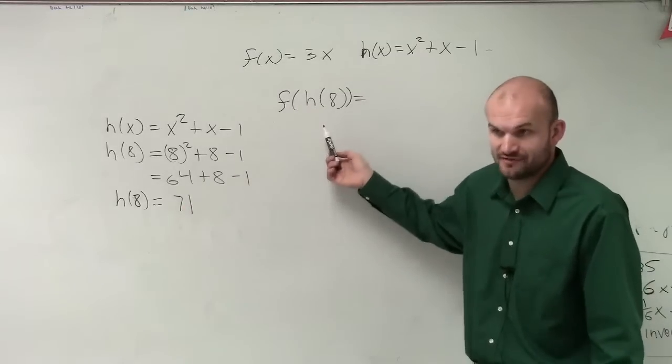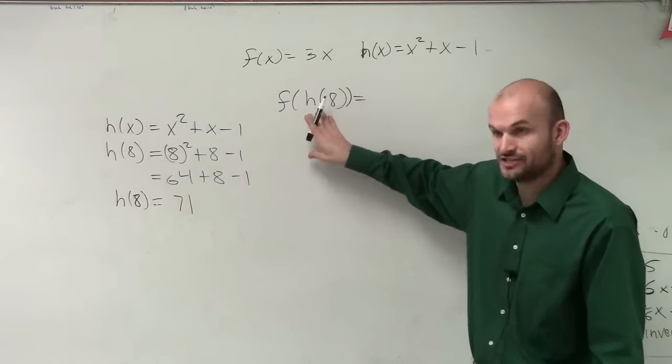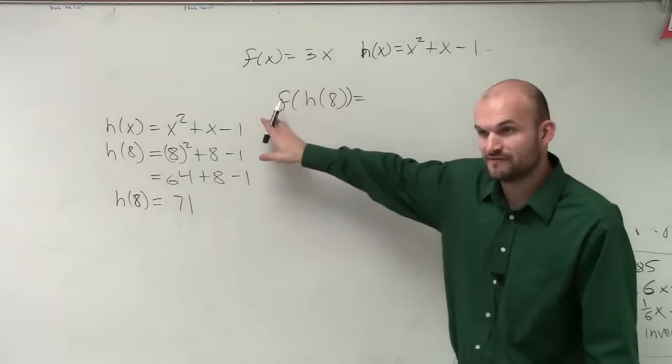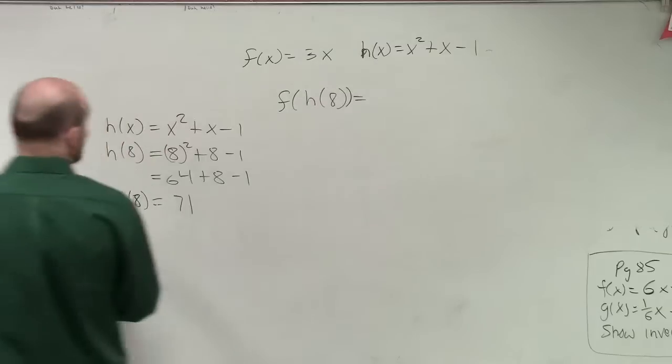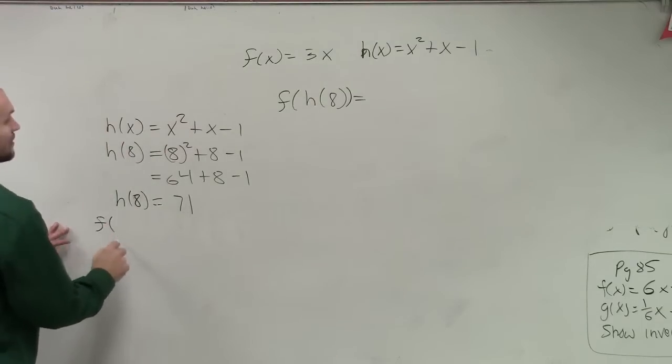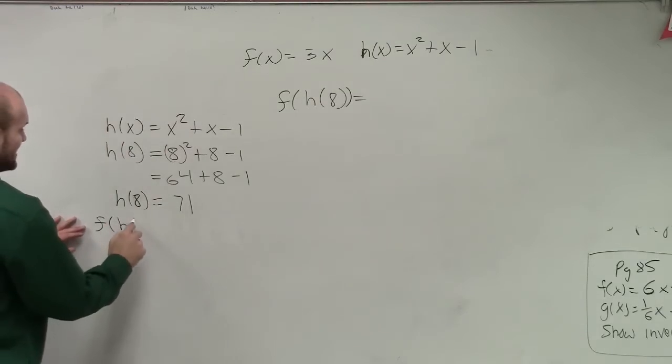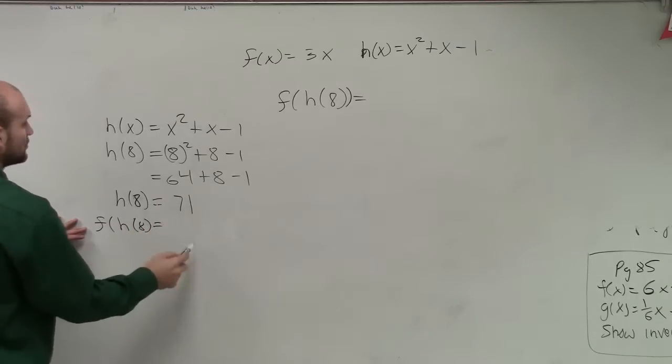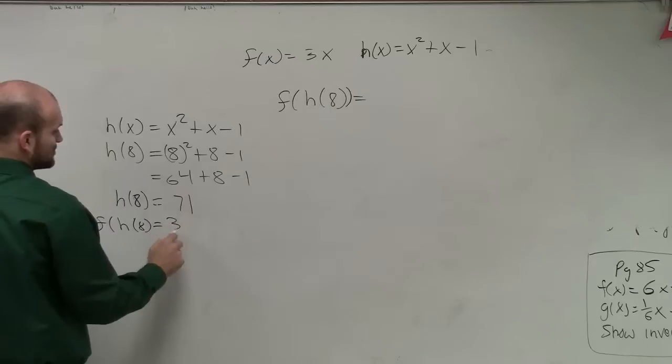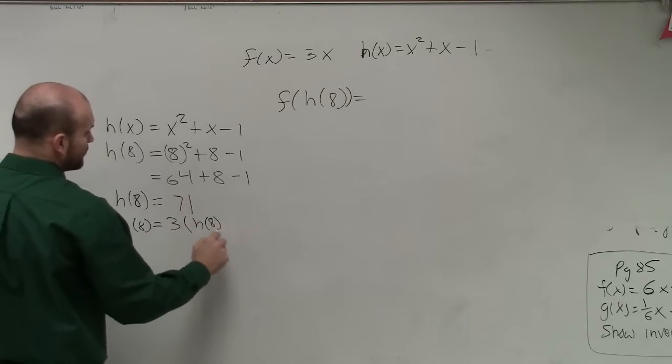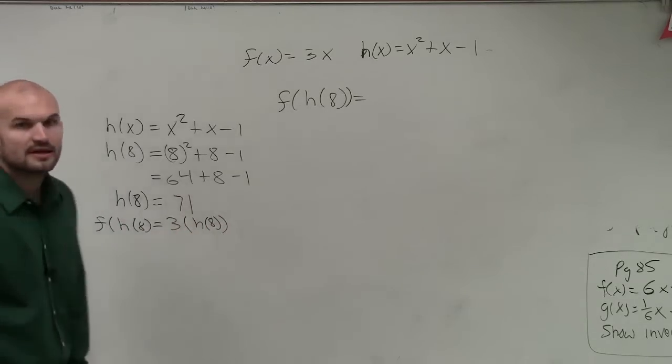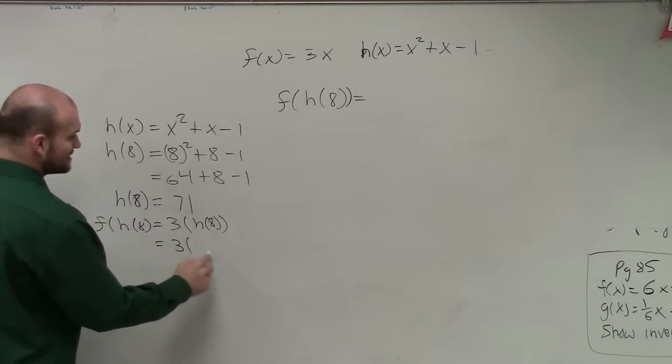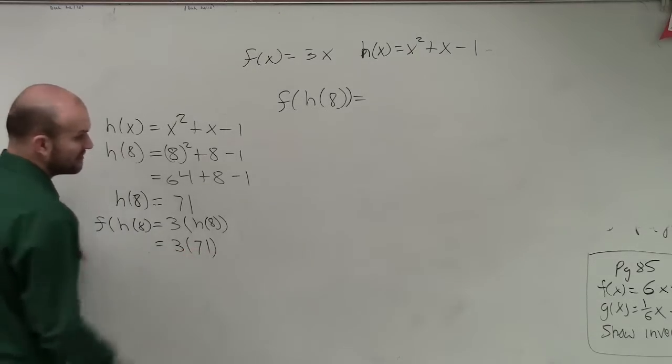it's saying find f of h of 8. That means we're going to plug h of 8 into my function f of x. So what we could say is f of h of 8 is equal to my f of x function, which is 3 times h of 8. Well, we just figured out h of 8 is equal to 71.